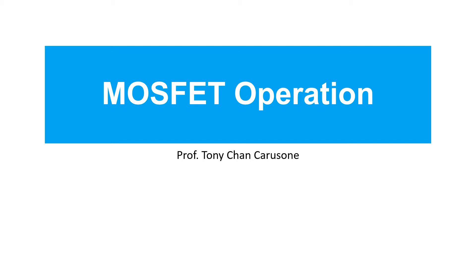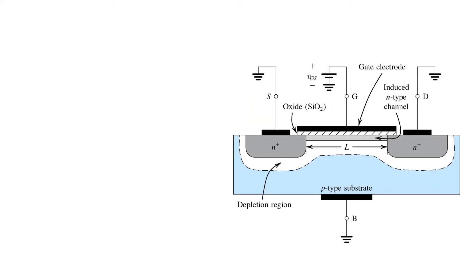In this video, we'll cover the basic operation of the MOSFET. Recall that in our typical enhancement mode N-channel MOSFET, the source and drain are insulated from each other by depletion regions when zero voltage is applied to the gate.